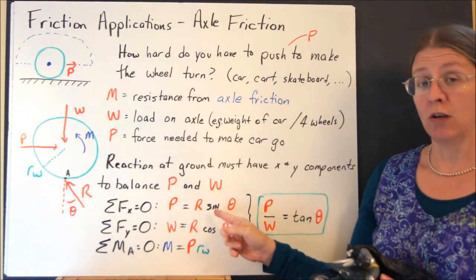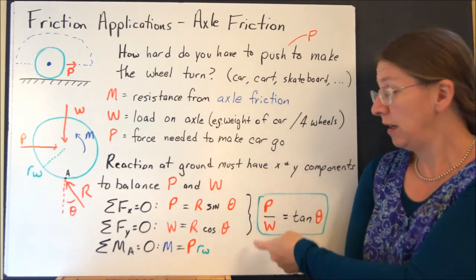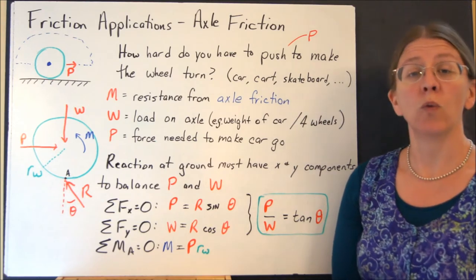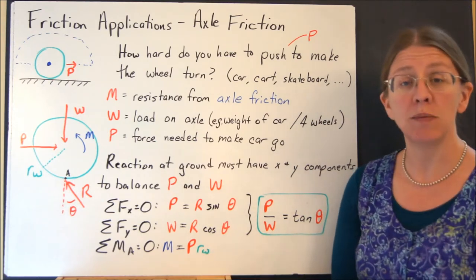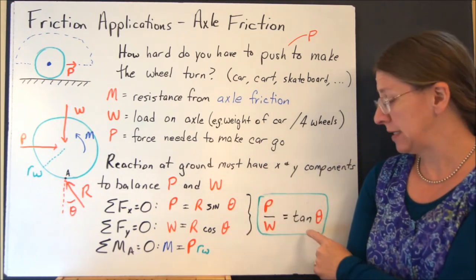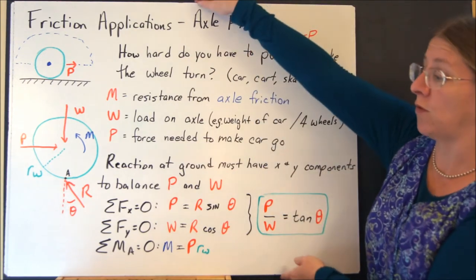So if I look at equilibrium, remember everything is at equilibrium. P is R sine theta, W is R cosine theta, and if I sum the moments, whatever resistance I'll have from that axle is actually going to be P times the radius of the wheel. If I take one of these and divide by the other one, you can see that in fact P over W is tan theta. That's what I'm going to take to go forward from here.